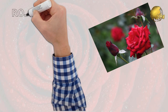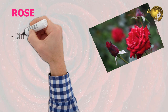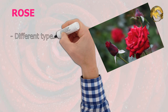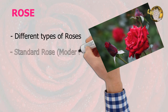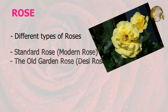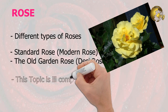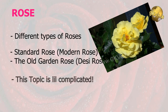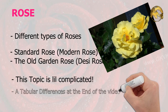Hello Friends! In today's video, I shall try my best to provide a simple and precise explanation about the different types of roses like the Modern Rose, also known as Standard Rose, and the Old Garden Rose, also known as Original Desi Rose, plus what are the commonly used present day Hybrid Roses. This topic is a little complicated for small gardeners including me. We will also show you a table with feature-wise differences between the Old Garden Rose and the Modern Rose.